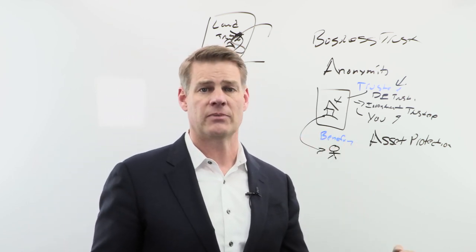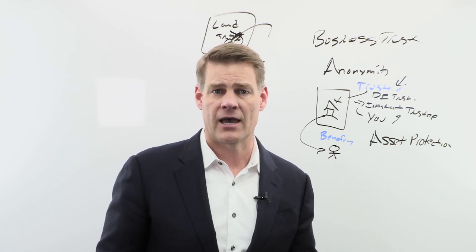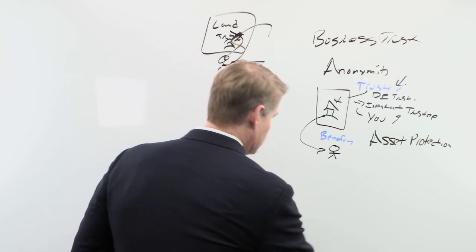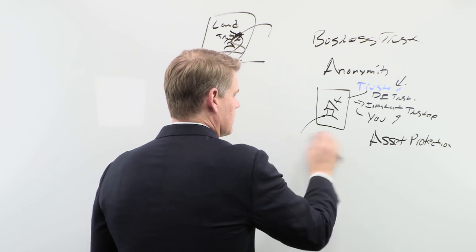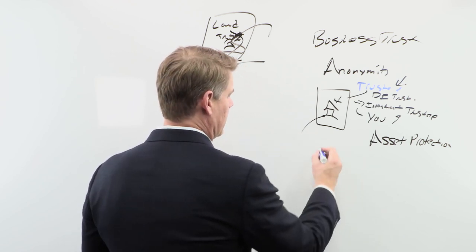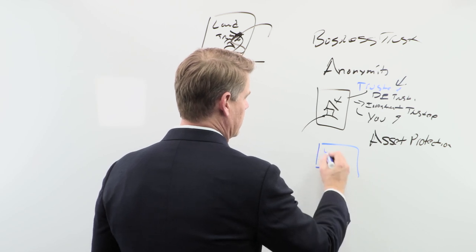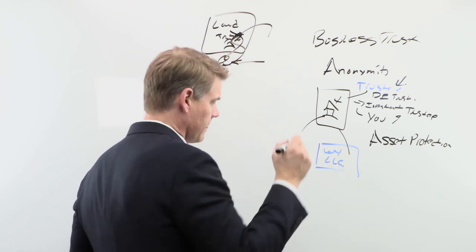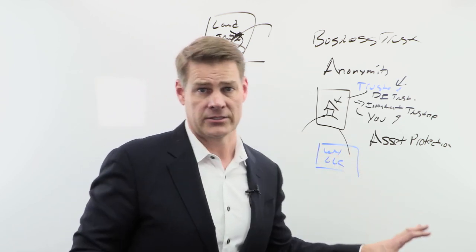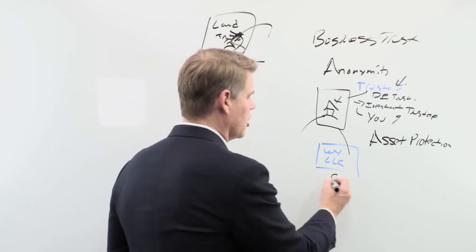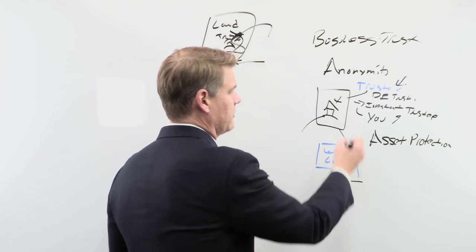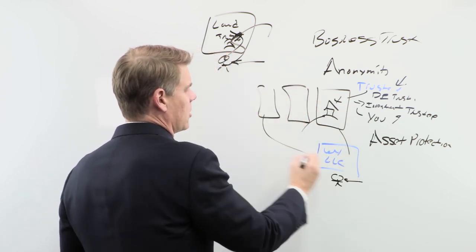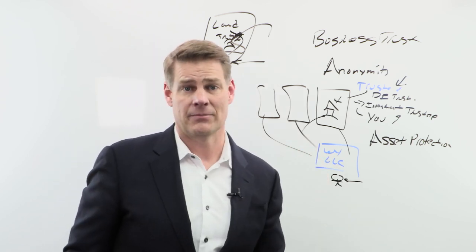Another option: if you want protection for yourself instead of being the beneficiary individually, make a Wyoming LLC the beneficiary. So now you have your statutory trust with the Wyoming LLC as the beneficiary. Now you have that charging order protection — if anybody sued you, your LLC protects your trust interest from your personal liability. You can have multiple trusts, all owned by this one limited liability company.